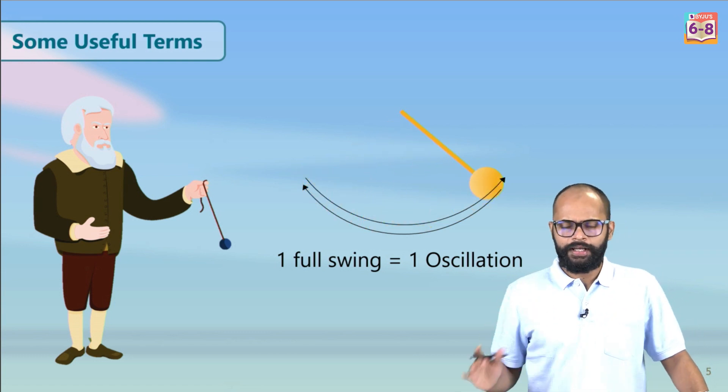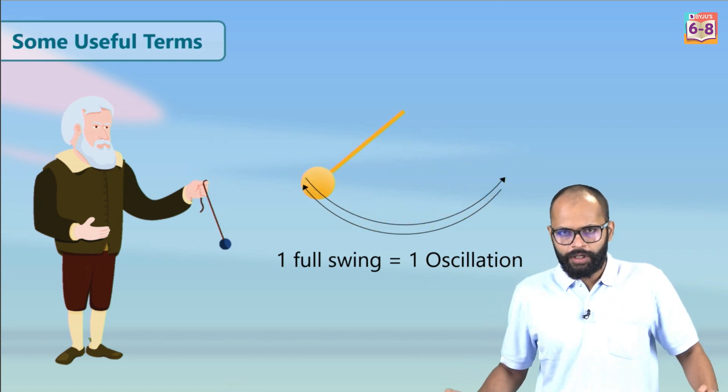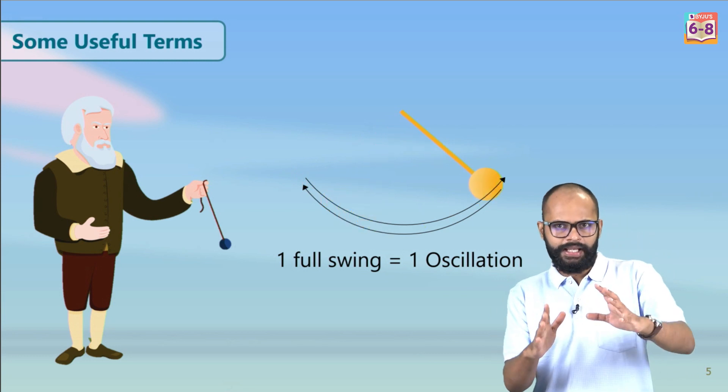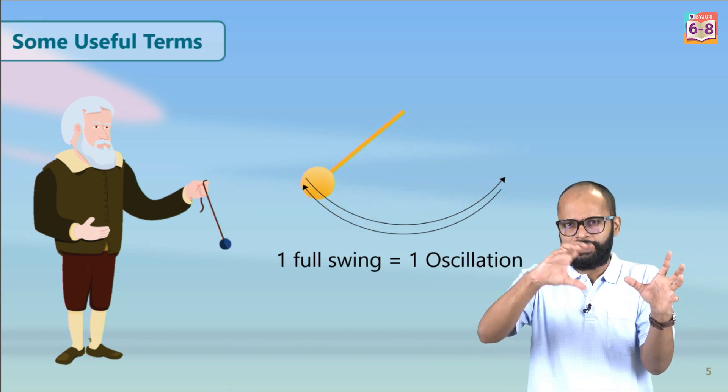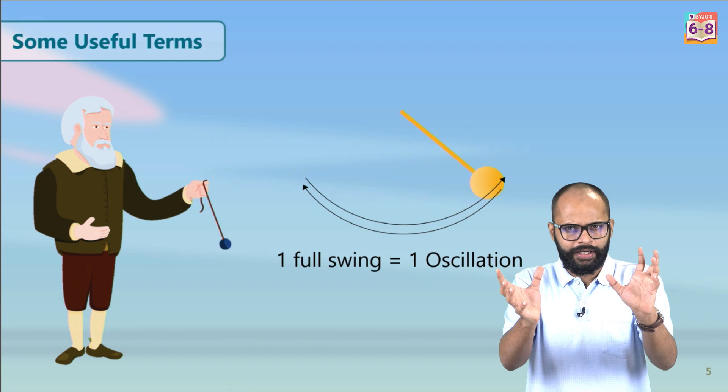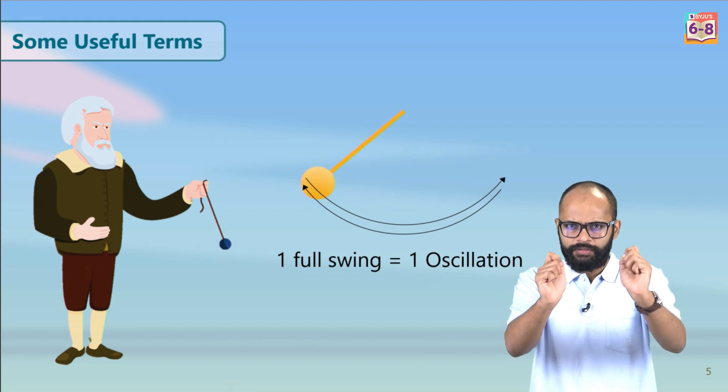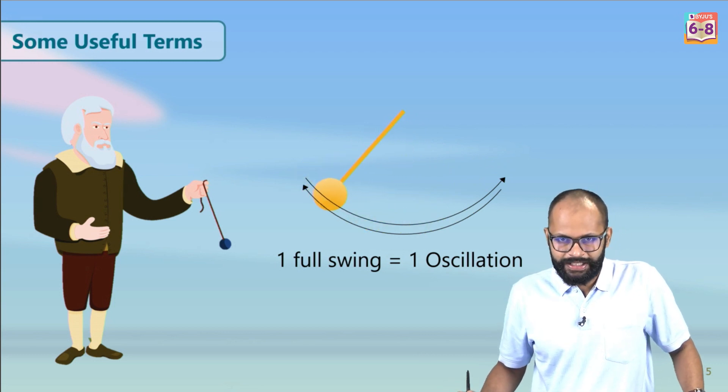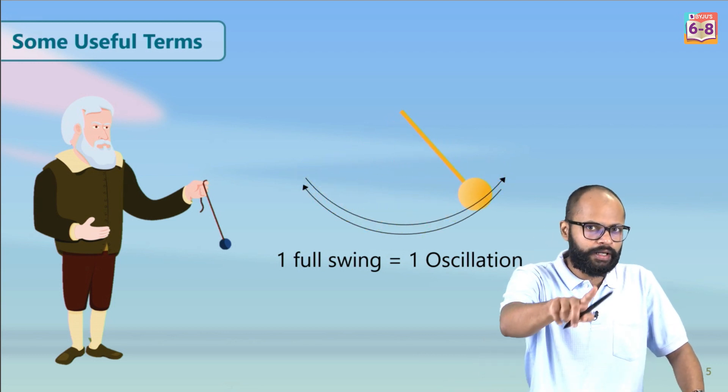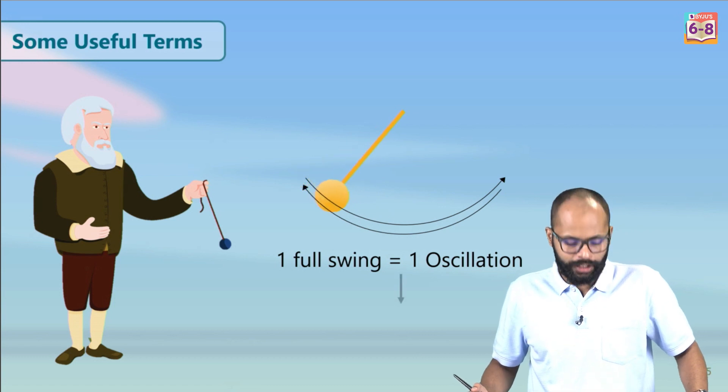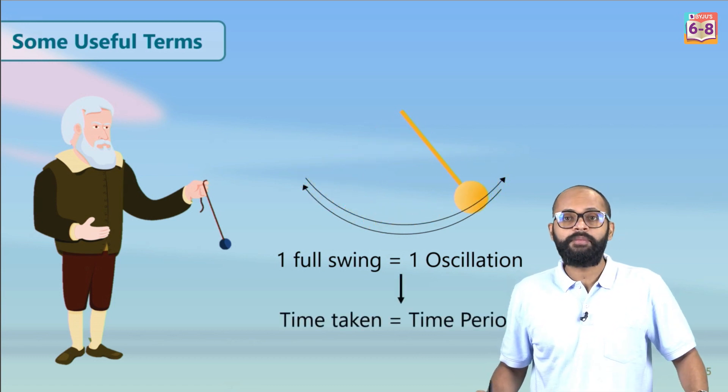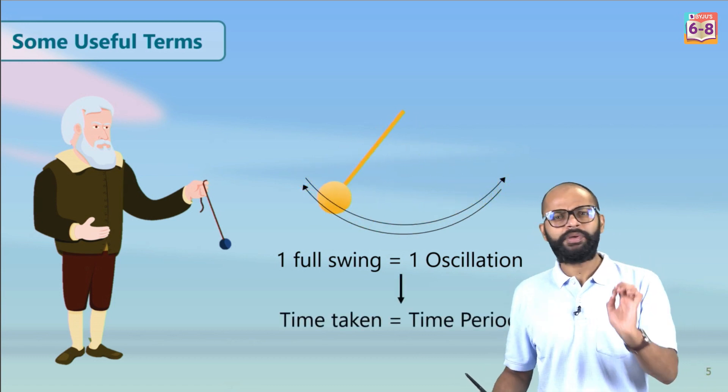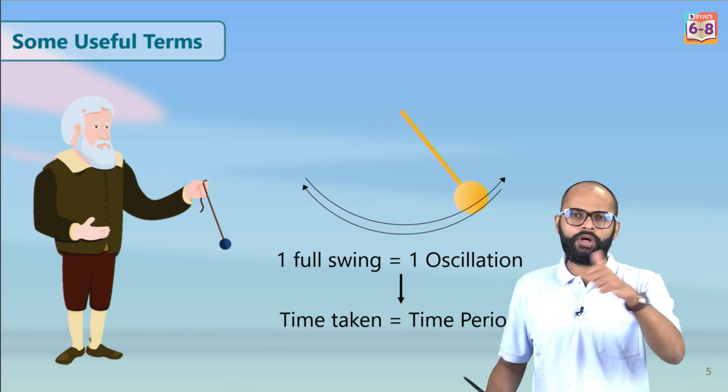All right, so what is the time period? Because we anyways are saying that pendulums and timekeeping is somehow relevant, right? So something must be there: time. One full swing equals one oscillation, and the time taken for the pendulum to complete this one oscillation is what we call as the time period of the pendulum. Time taken to complete one oscillation is the time period.